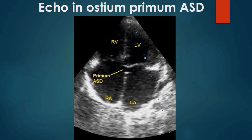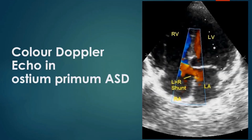Another association of ostium primum ASD is the inlet or canal ventricular septal defect. Color Doppler echocardiogram shows left-to-right shunt in ostium primum ASD. Though the actual direction of shunt is perpendicular to the direction of the beam, most of the blood moves from the left atrium across the ASD towards the tricuspid valve in a direction parallel to the beam and towards the transducer, which is why the flow is encoded red.